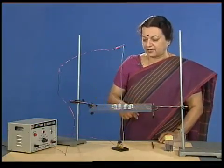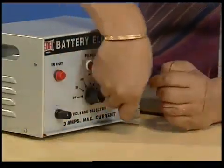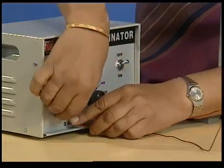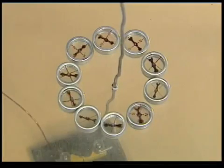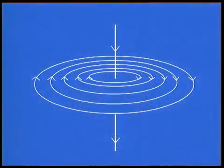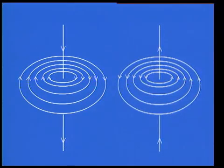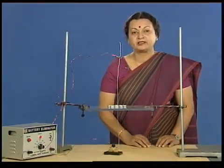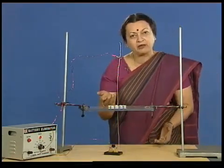Let us reverse the direction of current through the wire and see what happens to the compass needles. When we reverse the current in the wire, the direction of the magnetic field also reverses. So a definite relationship exists between the direction of current through the wire and the direction of magnetic field around it. But how can we remember something like this?